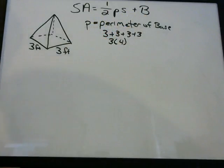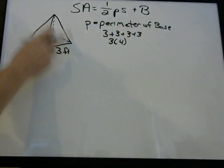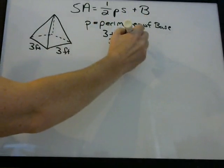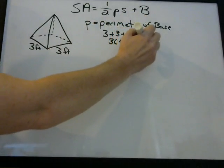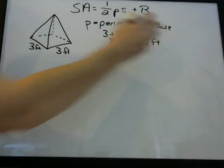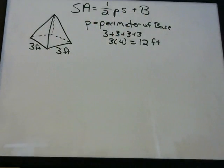Or you can write that as three times four — whichever makes most sense to you. You can add three four times or just multiply three times four, and you get twelve feet. That's your P.